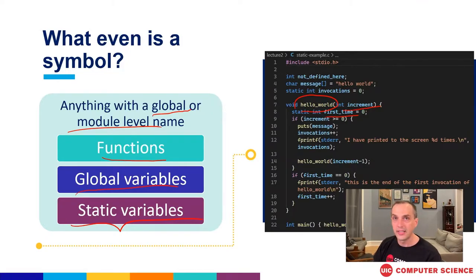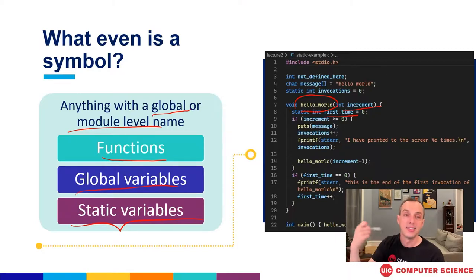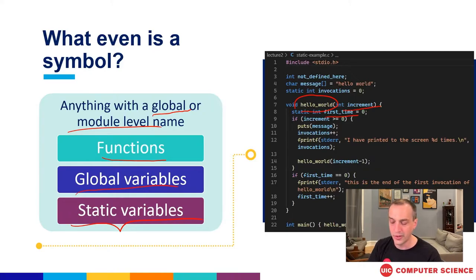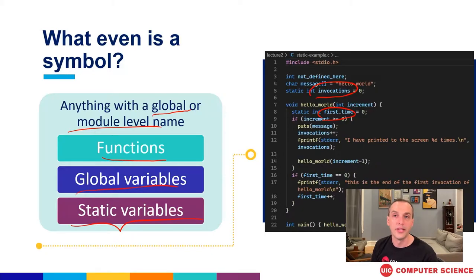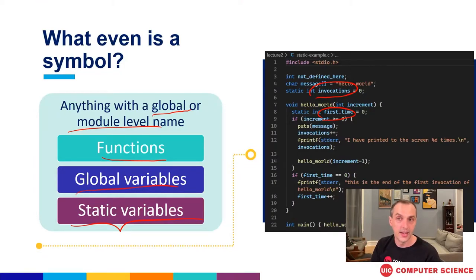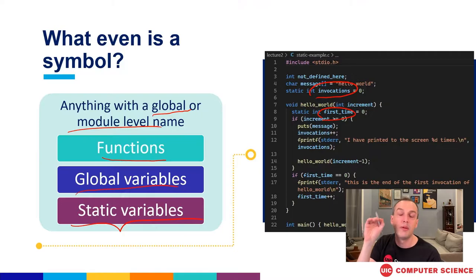Symbols aren't always for connecting this file to functions defined elsewhere or vice versa. Static variables in C function as private variables. We've got two examples in this file: our static invocations and 'first_time', which is within the function hello_world. These are both static variables not visible to anyone else anywhere in the running program once linked. But we still need to track them as symbols because we're going to move them around and give them their own home in memory when we create the executable.